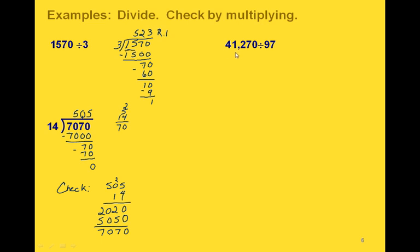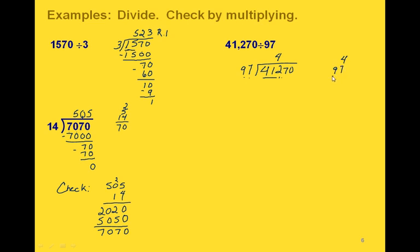One more: we want to divide 41,270 by 97. That means we're putting the 41,270 under our division sign. We start by comparing 97 to the first two digits — 97 is actually bigger than 41, so we go over to the third digit and compare 97 to 412. We have to estimate how many times 97 will go into 412. Since 97 is very close to 100, it's probably going to go in about four times. Then we do 4 times 97: we get 28, carry the 2, and 36 plus 2 is 38 — so we get 388.